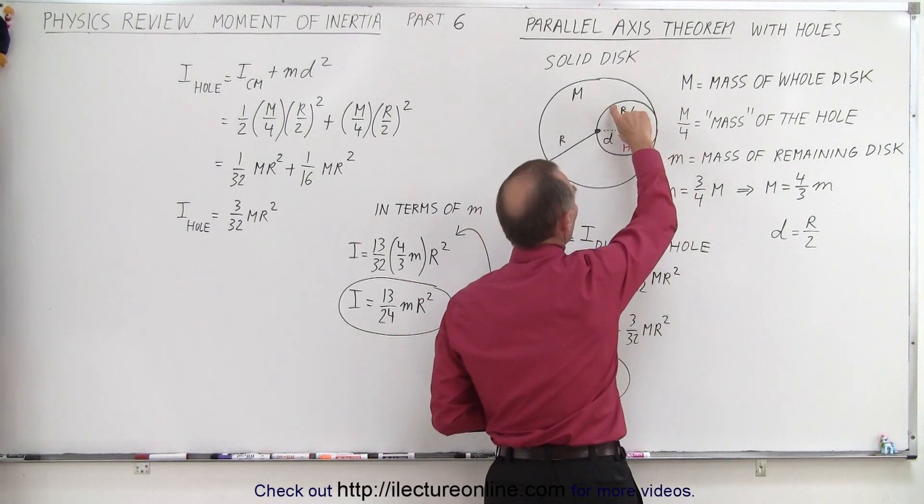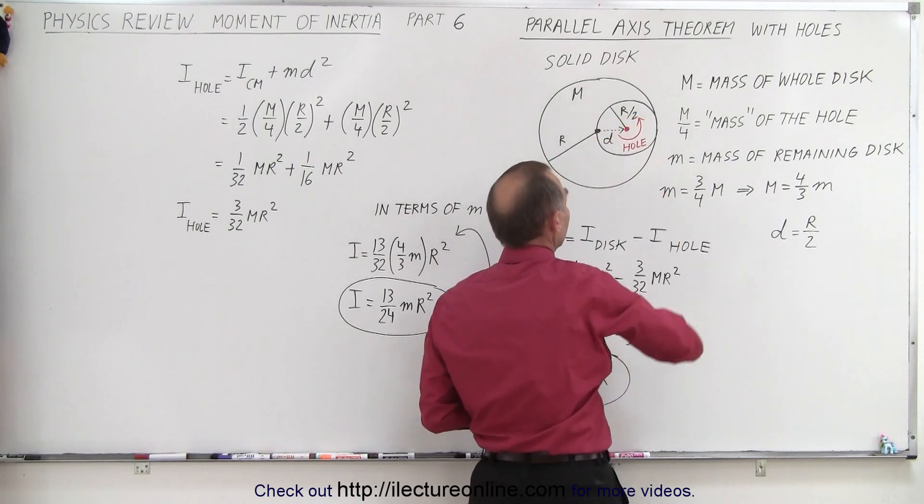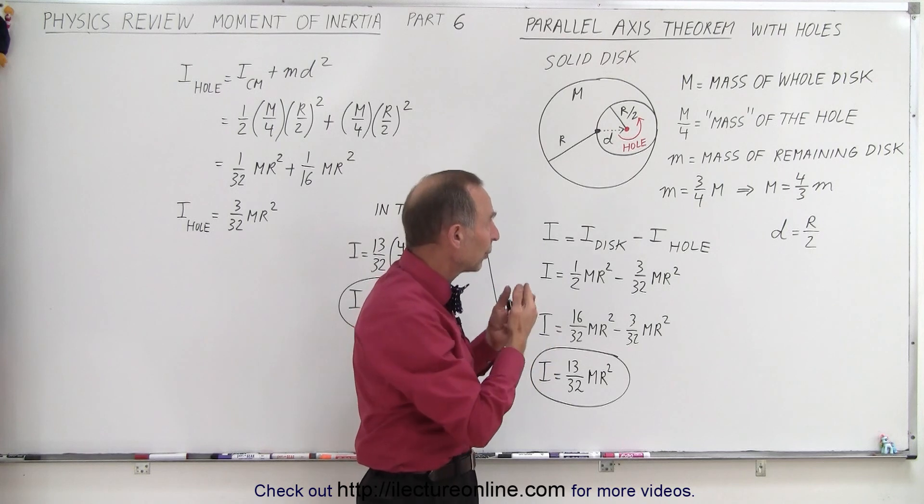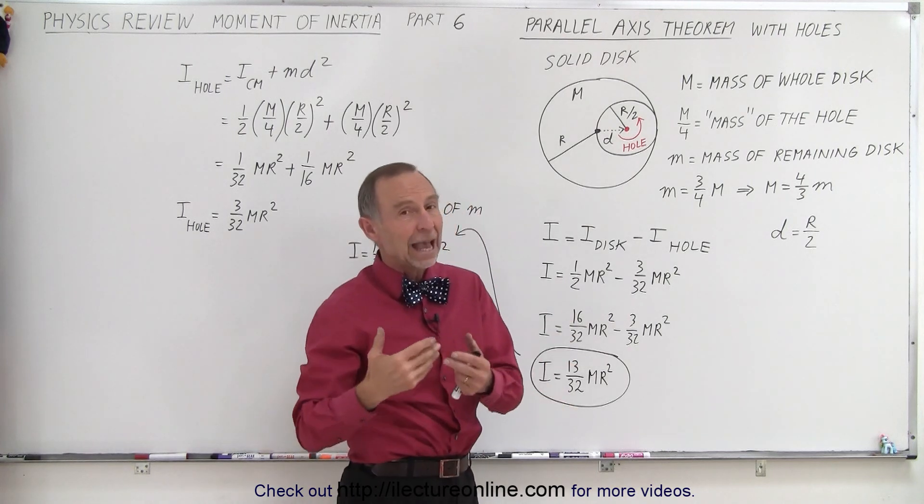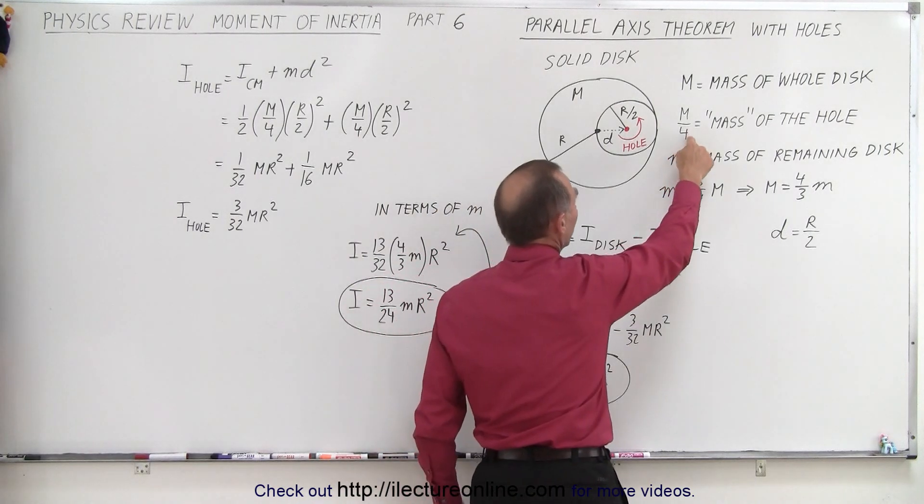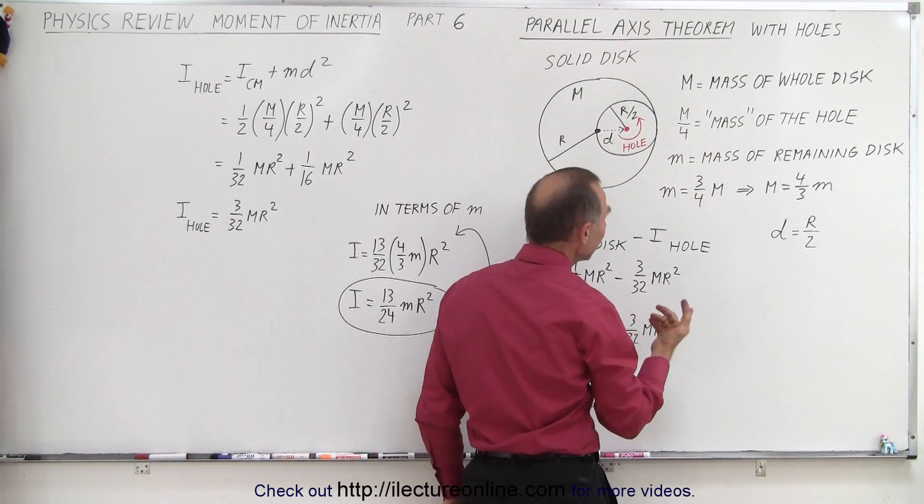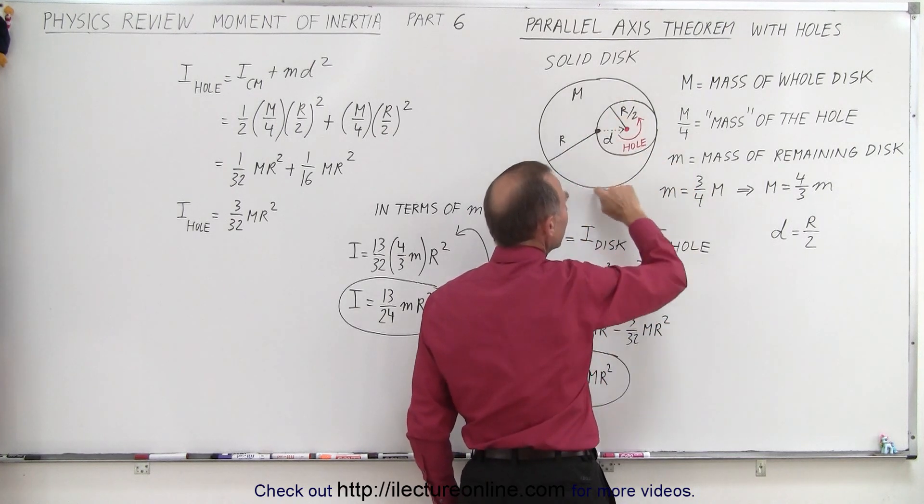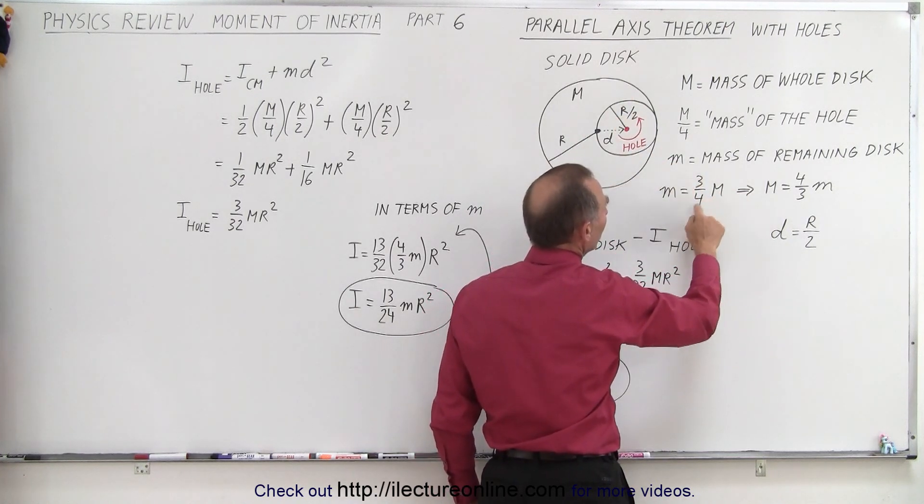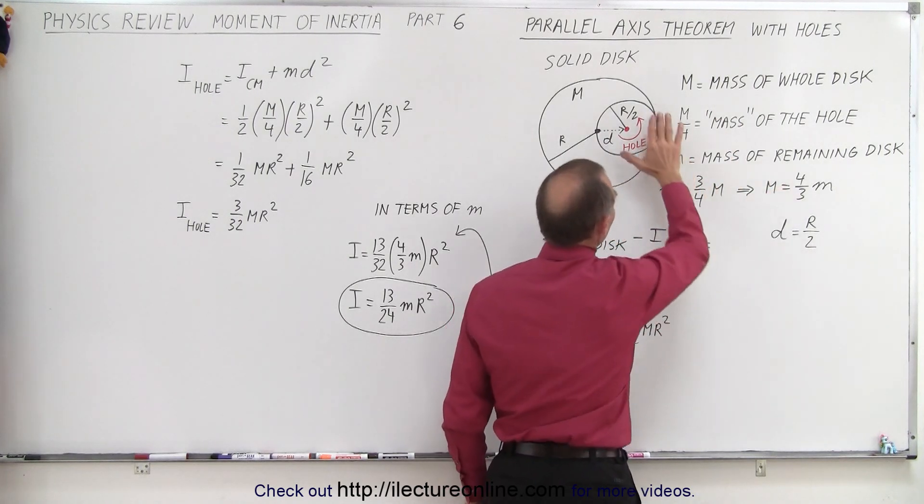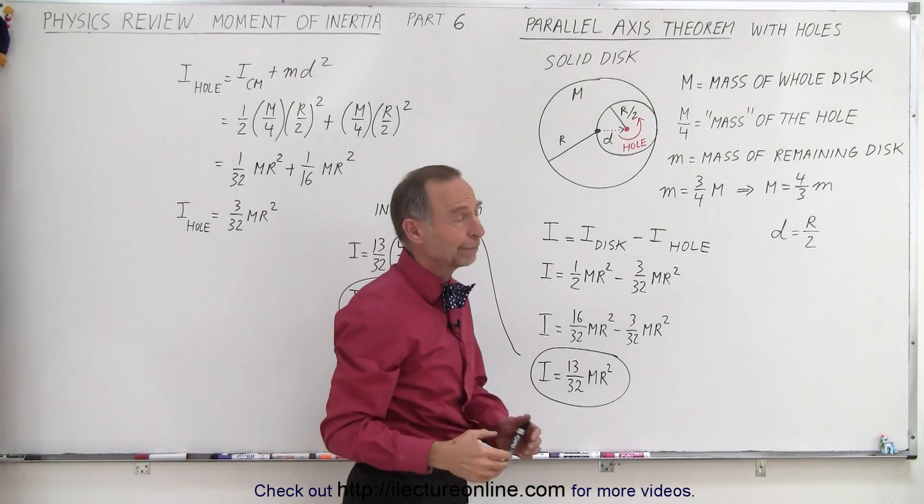Because the radius of the hole is half the radius of the disc, and since the area and therefore the mass of the disc is proportional to the radius squared, when you take half the radius squared you get one quarter. So the mass of the hole is one quarter the mass of the total. Then small m can be the mass of the remaining piece, which would be three quarters the total mass, or the mass of the full disc is four thirds the mass of the remaining piece.